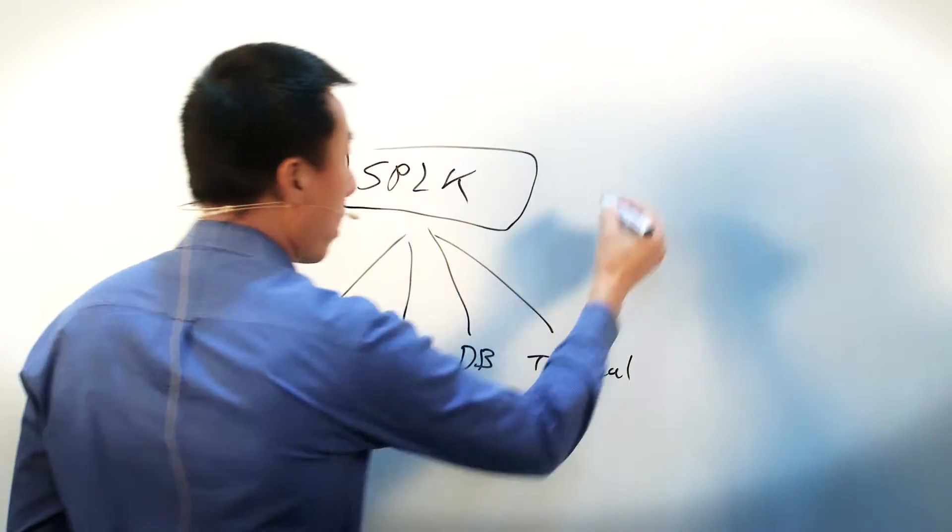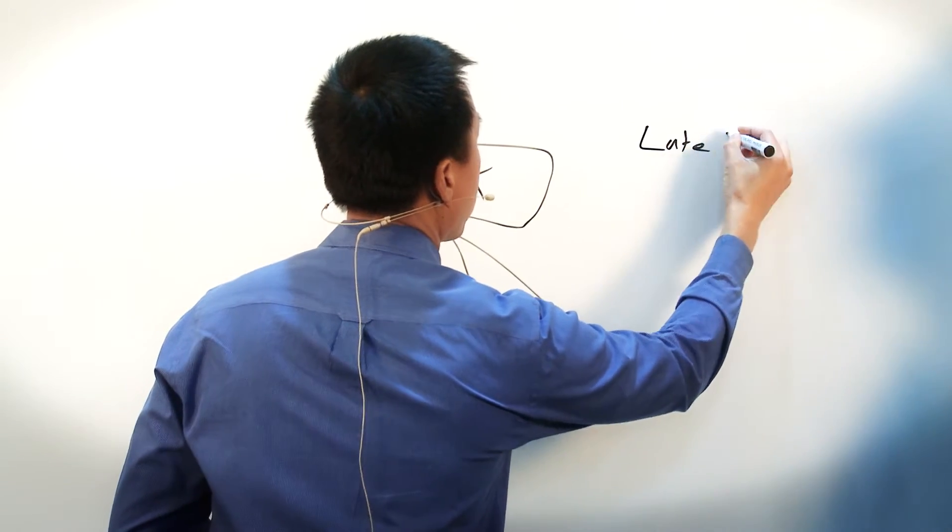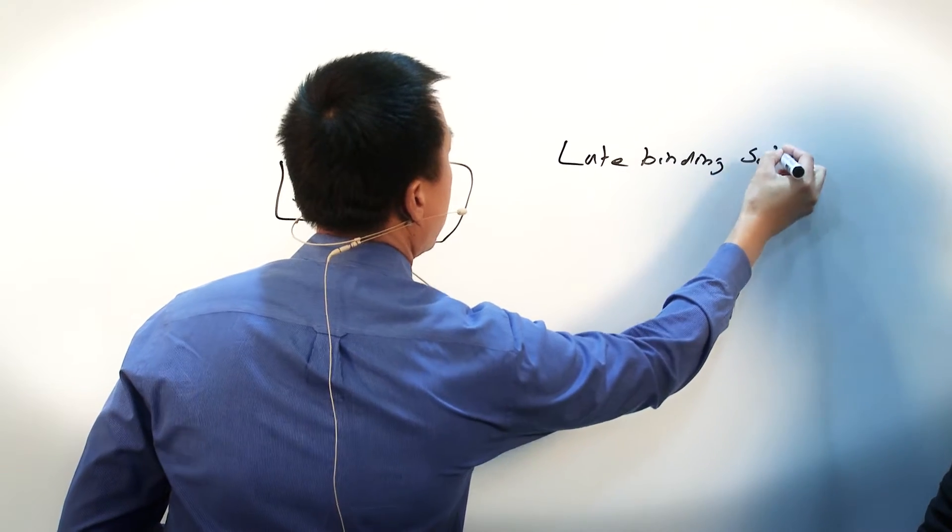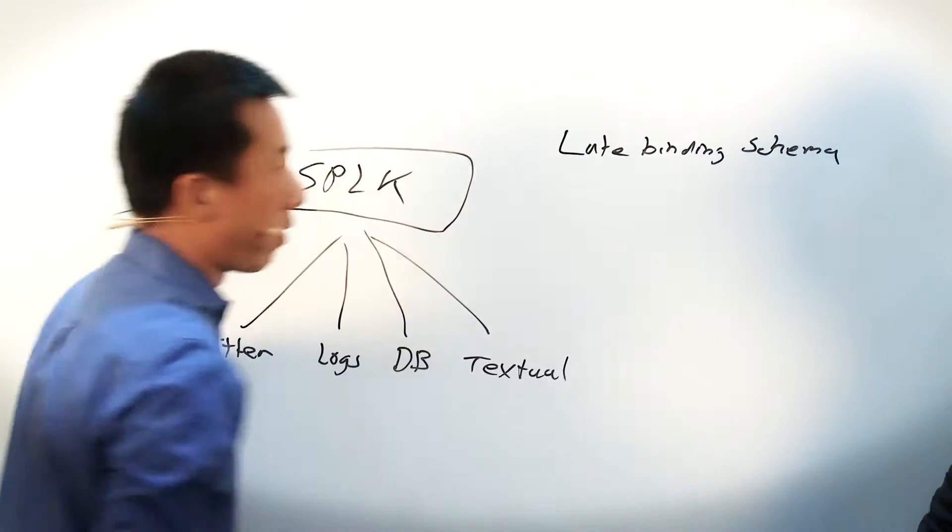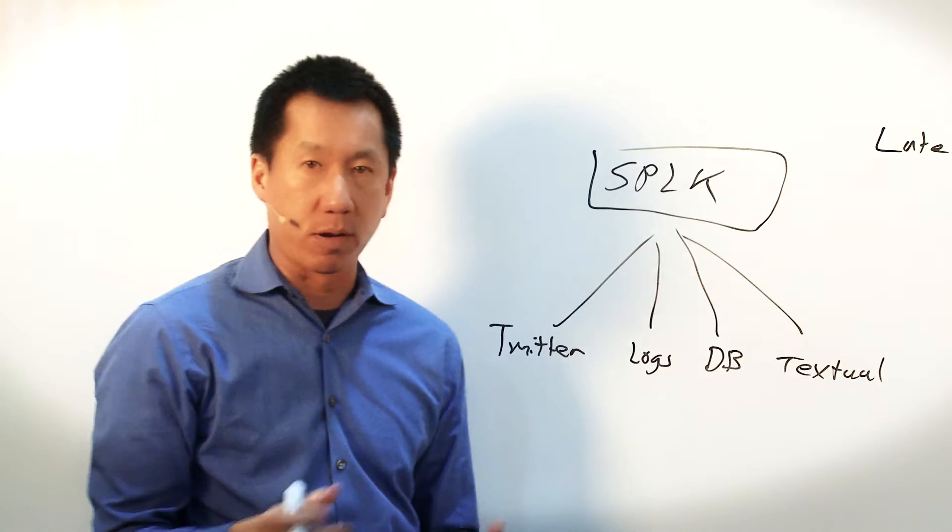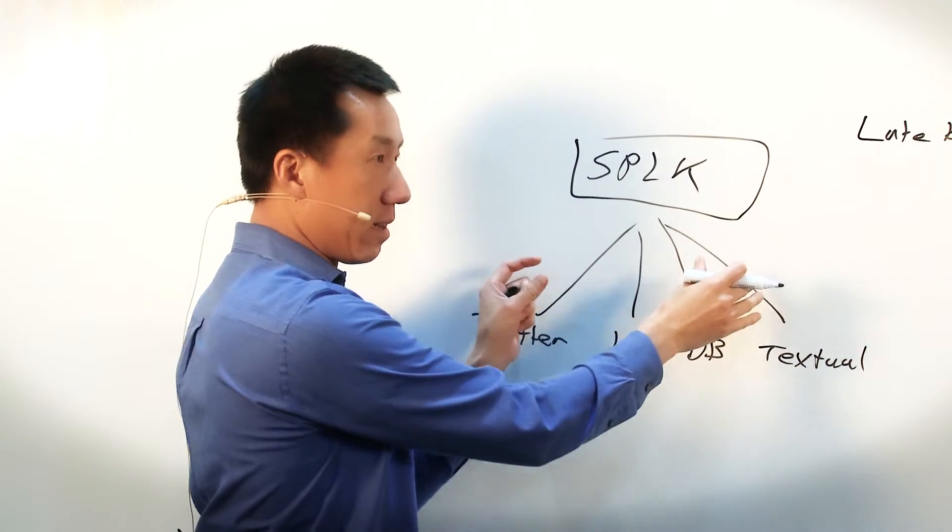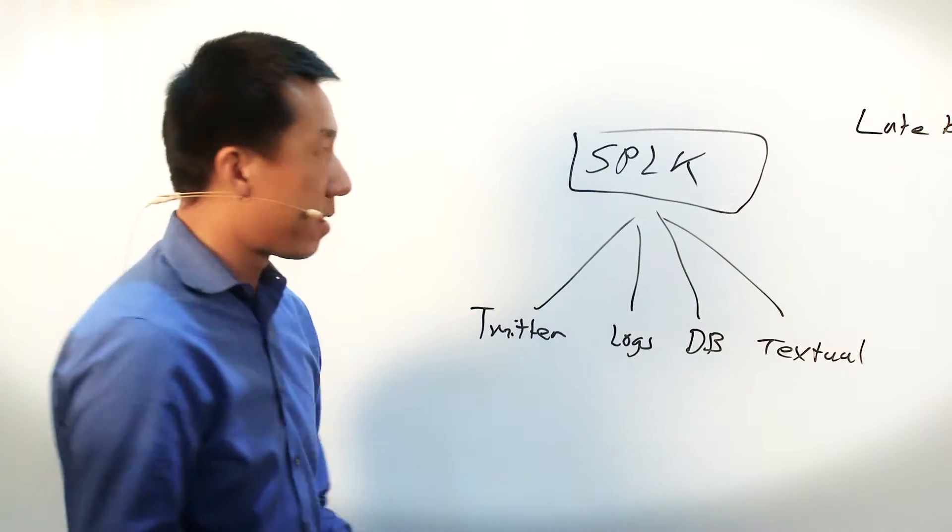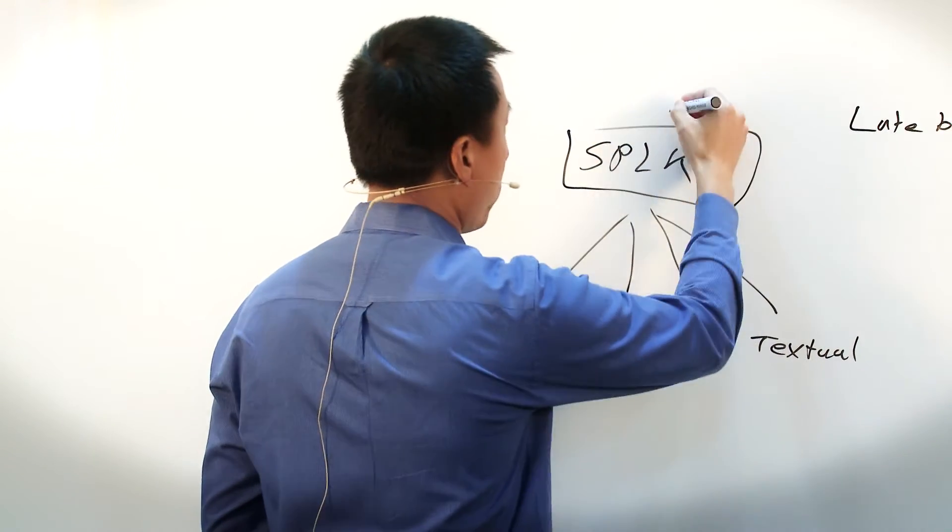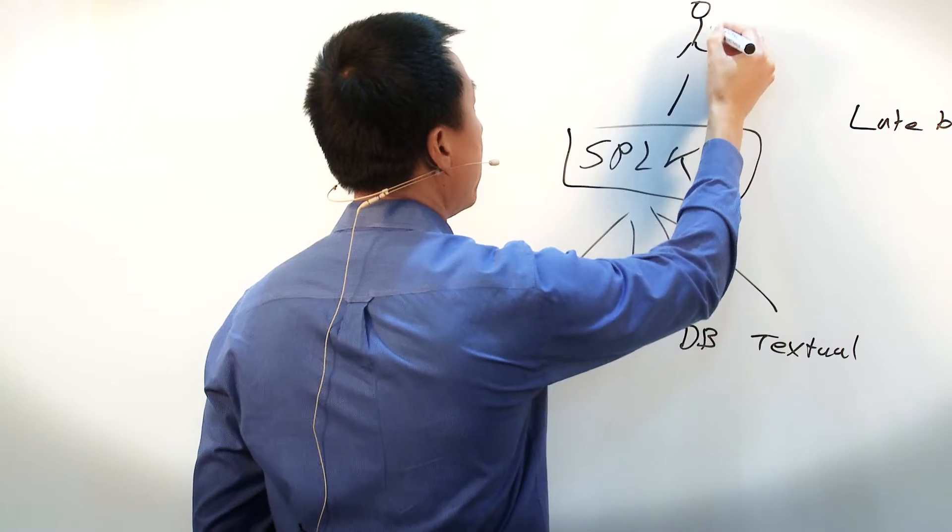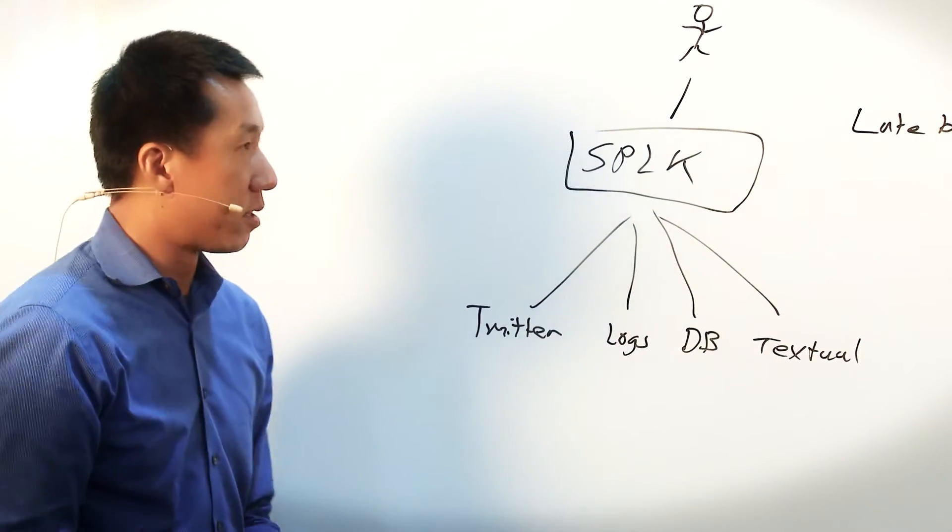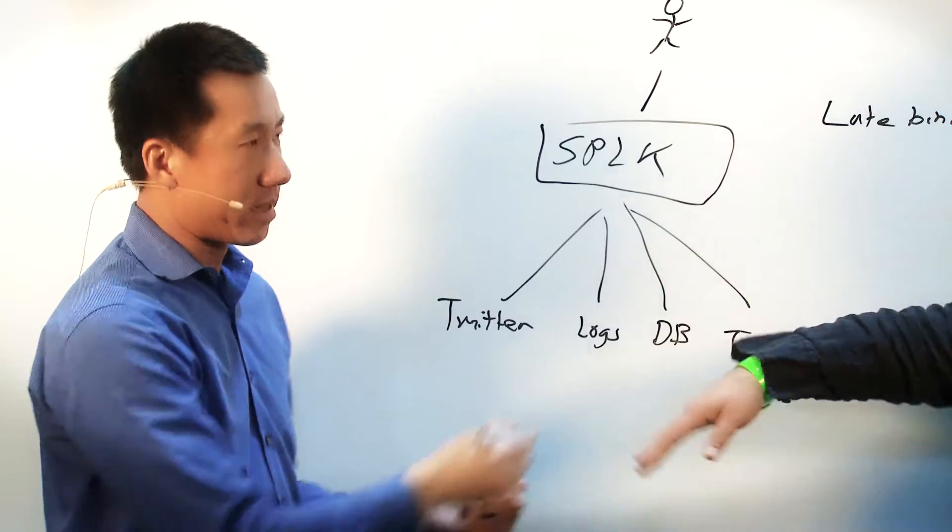Okay, so as I mentioned earlier, one of the key differentiators that we have is what we call a schema on the fly or a late binding schema. So what that means is, instead of your traditional database where you have to format all the data before it goes in, we take a reverse approach where we put the data as is, it's in its raw format. Then as you search it, as you want to look at it as a user, that's when we build a schema around it. So it's late binding.